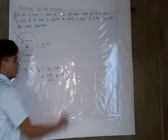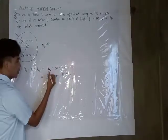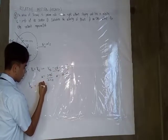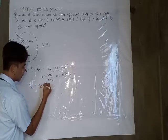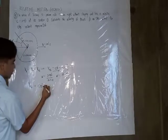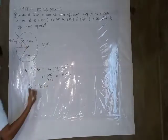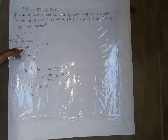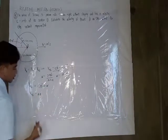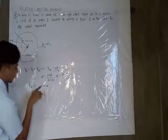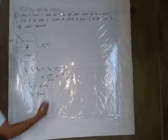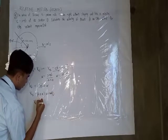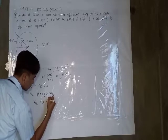Since we now have the angular velocity, we proceed to find the velocity of A relative to O. Using the same formula, V_{A/O} equals the radius — which is 200mm, converted to 0.2 meters — multiplied by the angular velocity of 10 radians per second. So the velocity of A relative to O equals 2 meters per second.